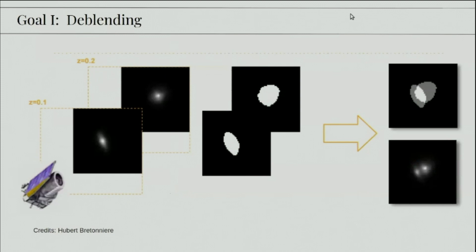So yesterday, Hubert explained very well what deep blending is. But for those who missed this talk, you can imagine that there are these two galaxies and they are not physically merging, but since there are different redshifts, they're physically separated. But since they're on the same line of sight, it appears to us that they are very close together. And this is blending. We want to deblend them or get their individual light profiles.